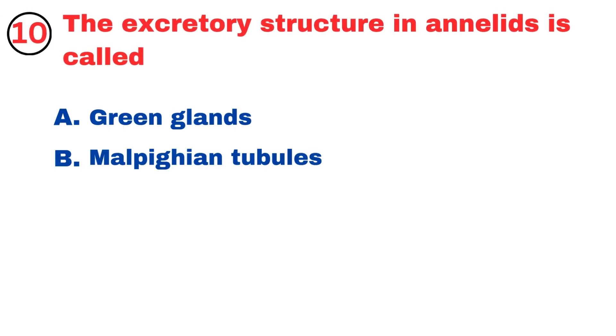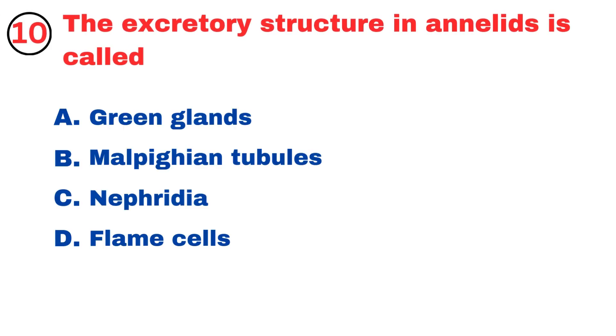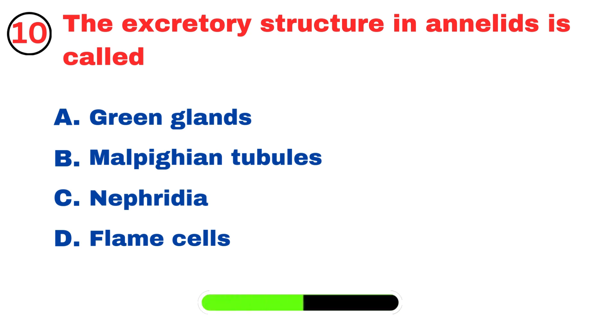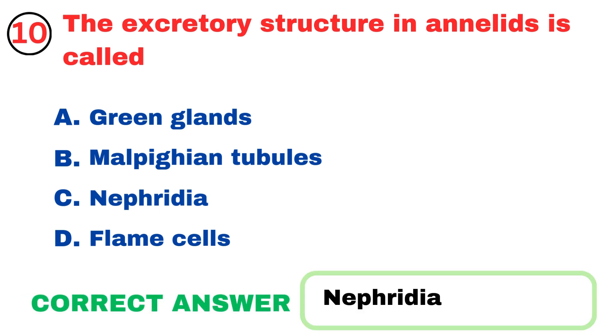The excretory structure in annelids is called? Nephridia.